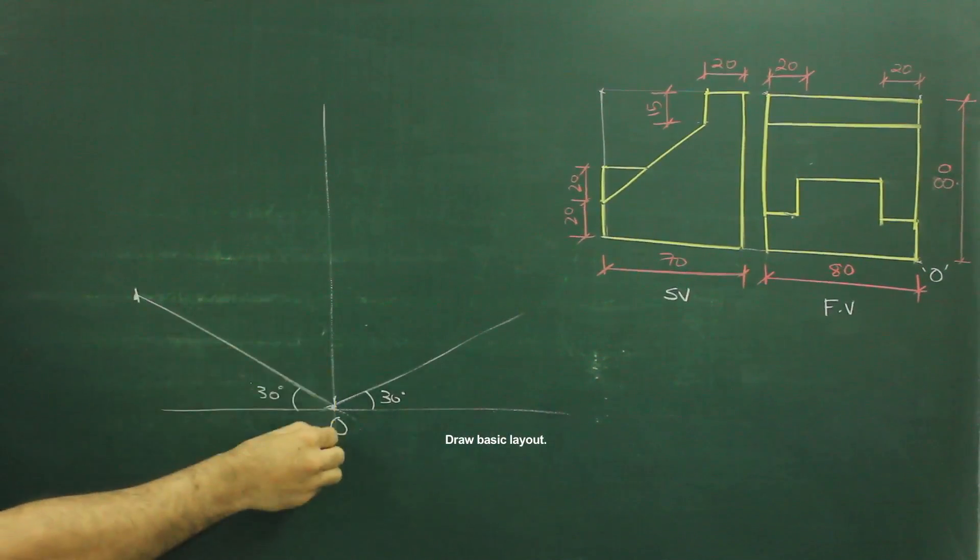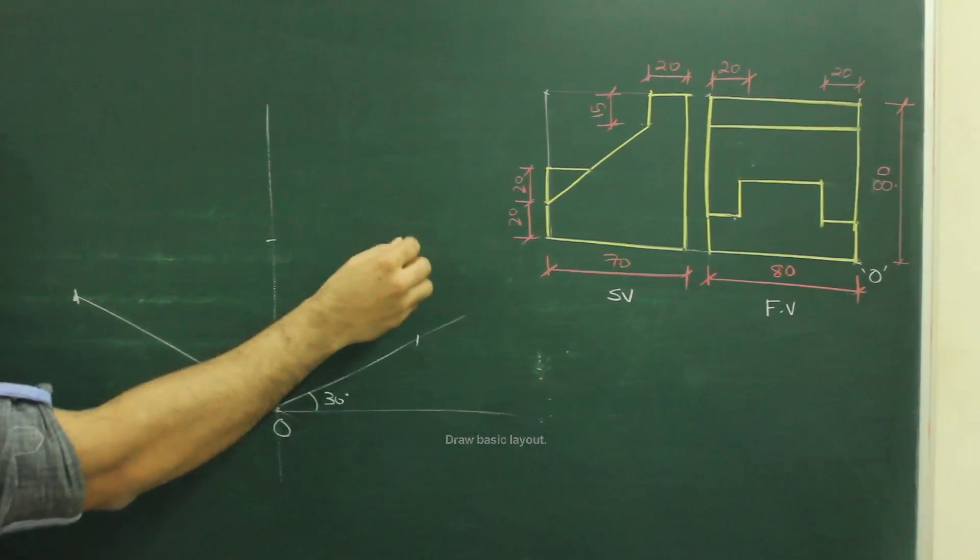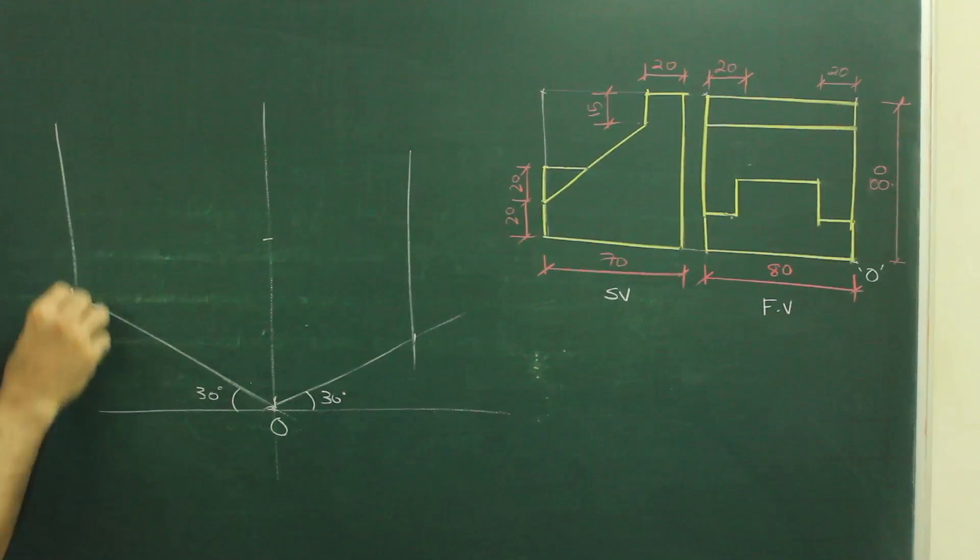Then height is 80, again we will cut, width is 70 and then we will draw the box.